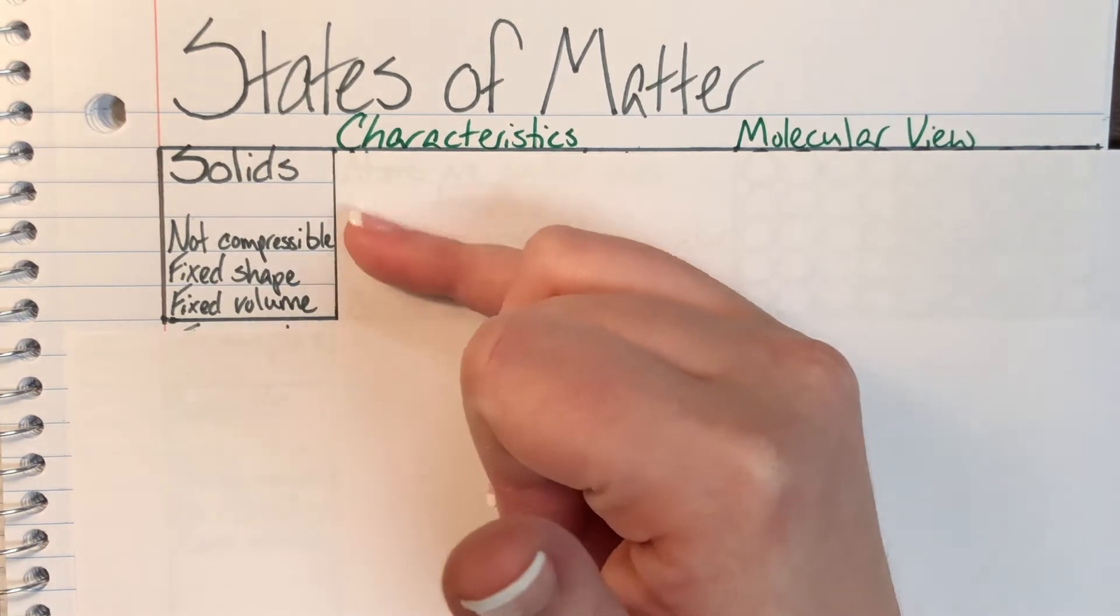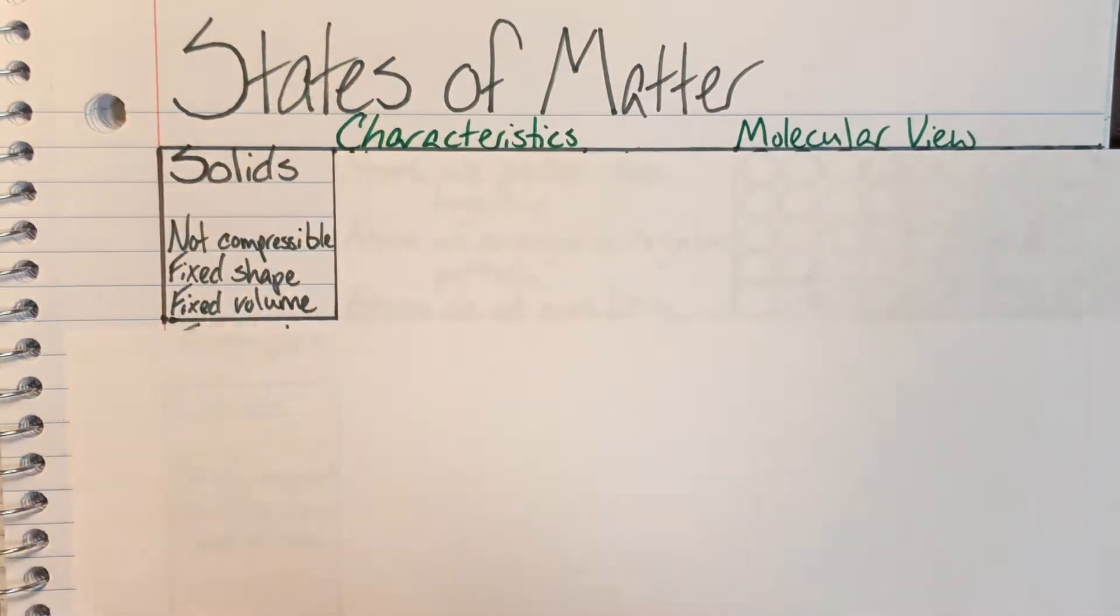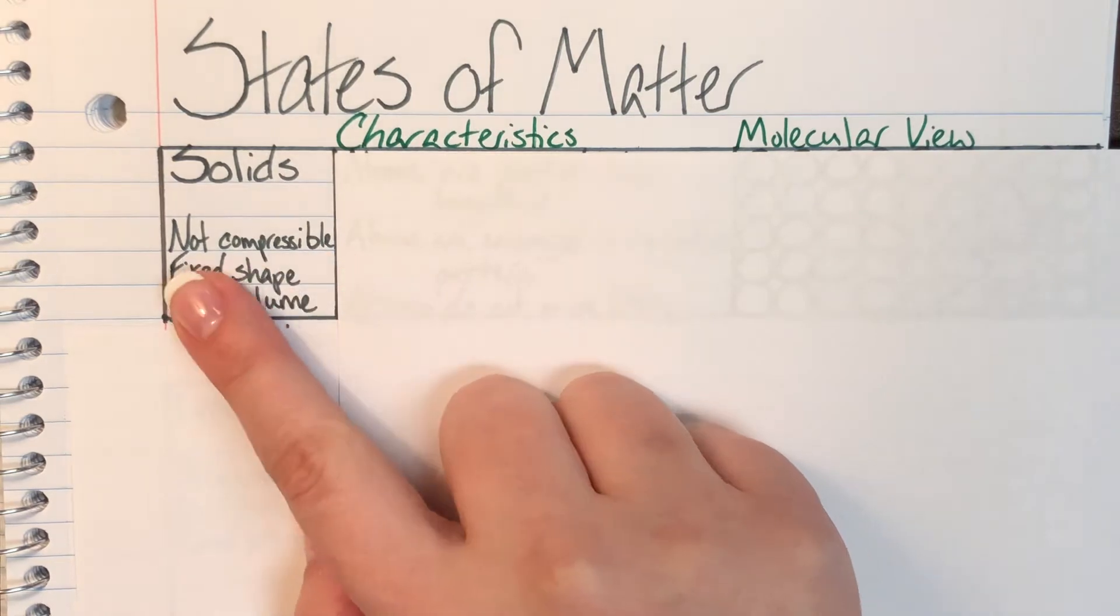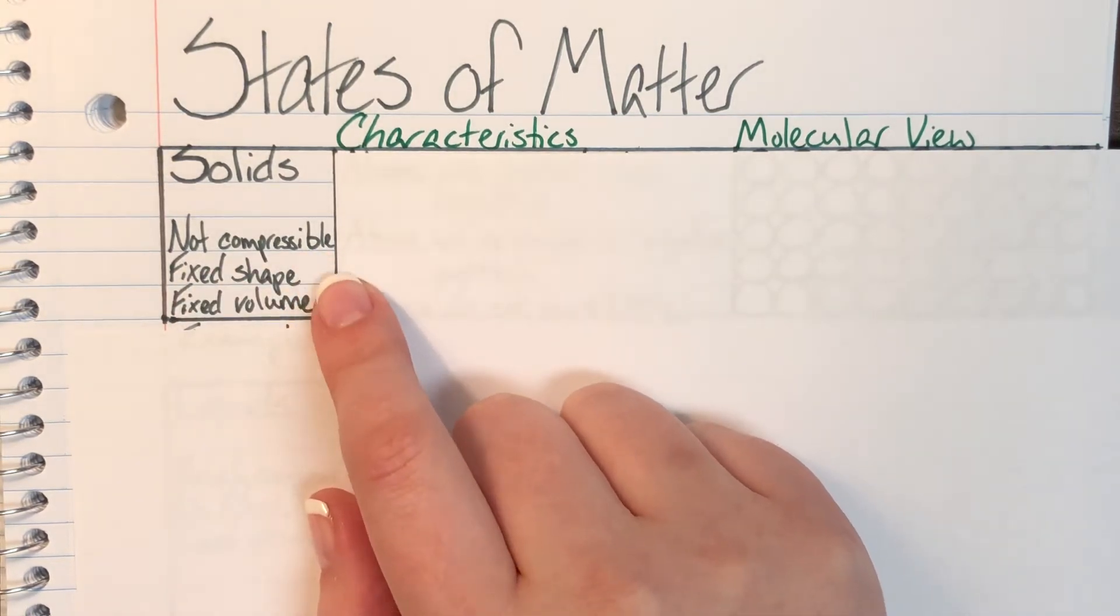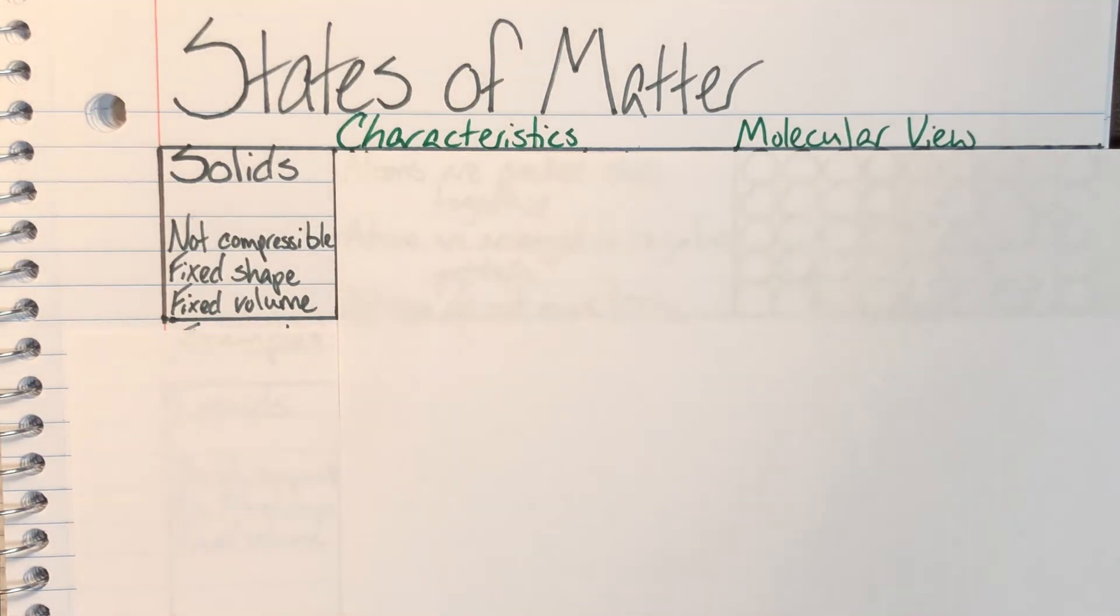Some characteristics about solids are that they are not compressible, they have a fixed shape and a fixed volume. That means that we can't make them any smaller, that's what compressibility means. We can't change their shape by putting them in a different container and they aren't going to grow or shrink because we put them in a different container either.